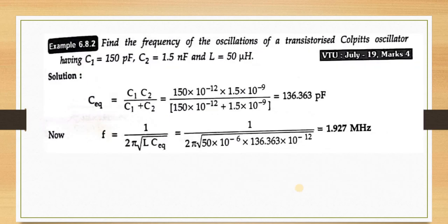Next problem: Find the frequency of oscillation directly. The formula is F = 1/(2π√(L·C_eq)), where C_eq = C1·C2/(C1+C2). Both C1, C2, and L values are given — substitute all known values to obtain the frequency of oscillation = 1.925 MHz.